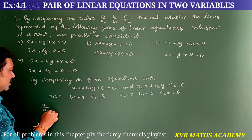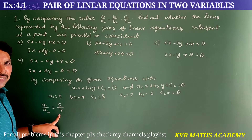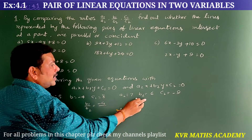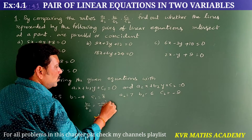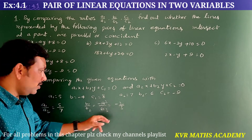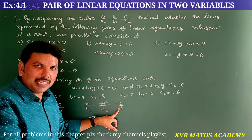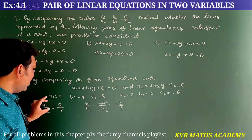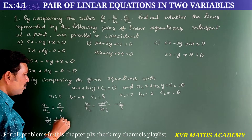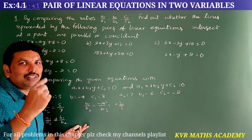A1 by A2 is equal to 5 by 7. Next, B1 by B2 is equal to minus 4 by 6. Cancelling, that gives minus 2 by 3. So here A1 by A2 is not equal to B1 by B2 — this is 5 by 7 and minus 2 by 3. So there is no need to find C1 by C2. If A1 by A2 equals B1 by B2, then we should find C1 by C2; otherwise no need. Since A1 by A2 is not equal to B1 by B2, these are intersecting lines and have a unique solution.